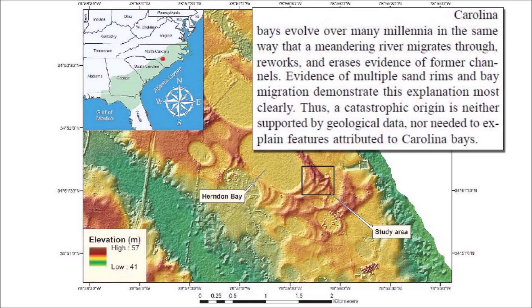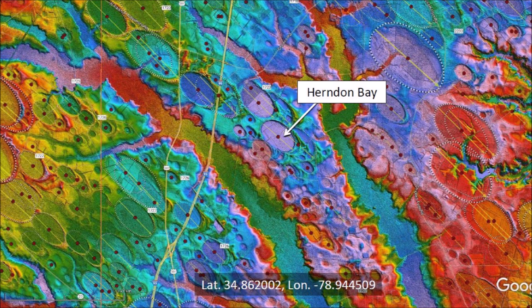The text of the article says that Carolina Bays evolve over many millennia in the same way that a meandering river migrates through, reworks, and erases evidence of former channels. Evidence of multiple sand rims and bay migration demonstrate this explanation most clearly. Thus, a catastrophic origin is neither supported by geological data nor needed to explain features attributed to the Carolina Bays. The paper by Moore claims that Herndon Bay migrated 600 meters from 37,000 to 27,000 years ago. This brings up the question of what happened to the neighboring bays — did they also migrate 600 meters during those 10,000 years? It doesn't seem likely, and many bays do not have multiple sand rims.